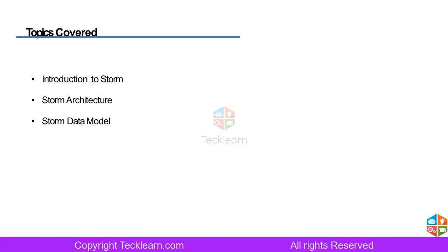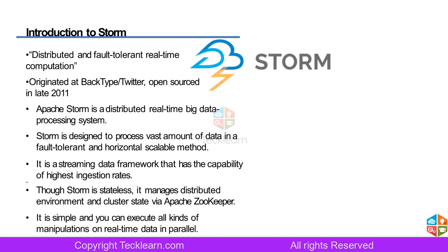Apache Hadoop is a technology used to process big data using batch processing. Today we will understand what Storm is — its architecture, components, and how Storm really works. We will go through theory today and tomorrow we will see some practicals.